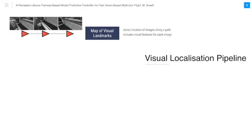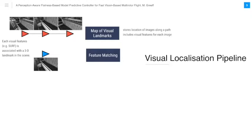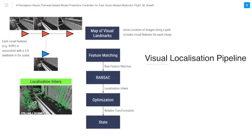Each of these visual features is associated with a 3D landmark in the scene. The visual localization pipeline starts by matching visual features in the current image with those at the closest image in the map. These raw feature matches are passed through RANSAC, which rejects some of the erroneous initial matches. The 3D landmarks associated with the remaining successfully matched visual features are called localization inliers. Based on the motion of these localization inliers in the scene, an optimization is performed to estimate the relative transformation between our current position and the closest one in the map. This is used to compute the position used in the state estimate of the controller.